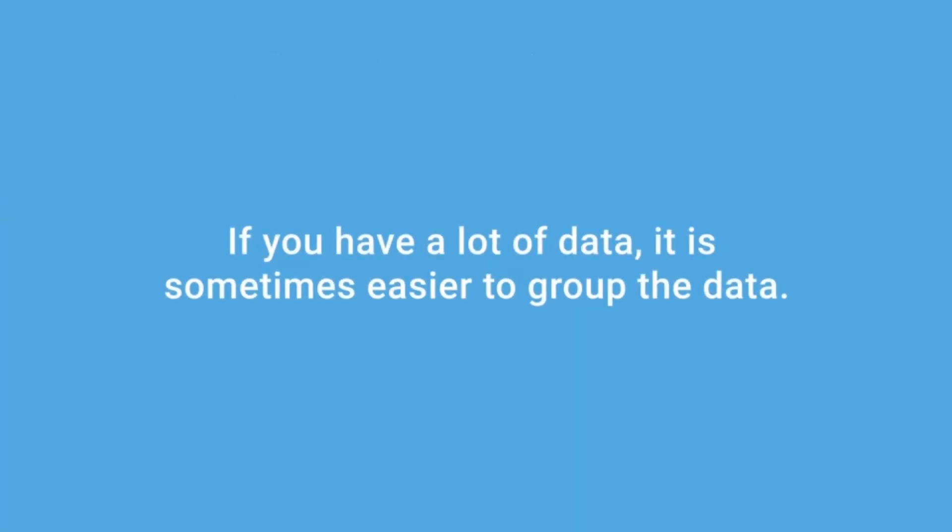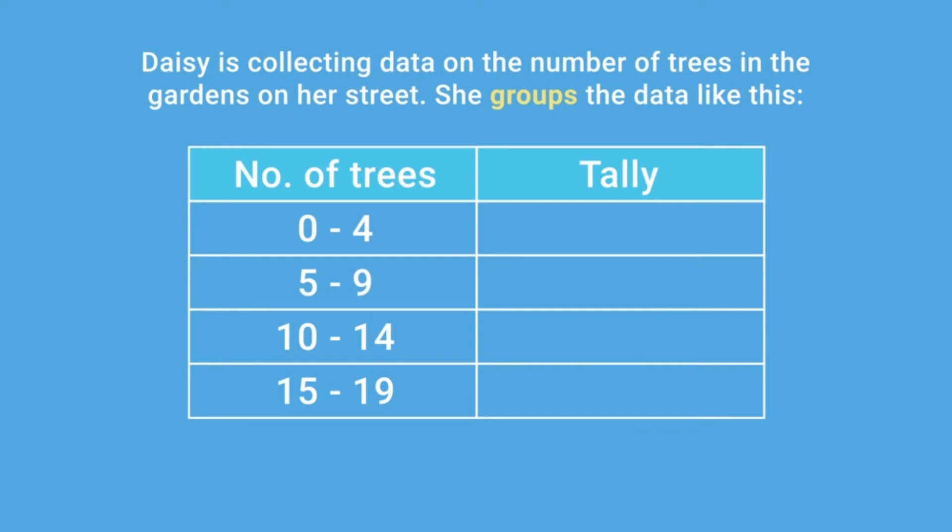If you have a lot of data, it's sometimes easier to group the data. For example, Daisy is collecting data on the number of trees in each garden on her street. She groups the data like this.